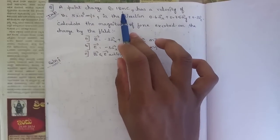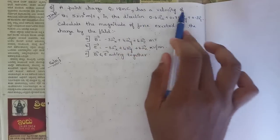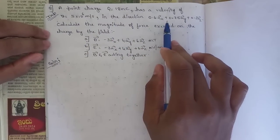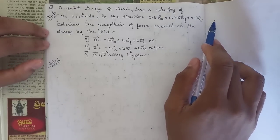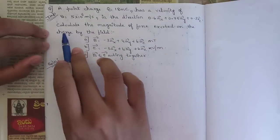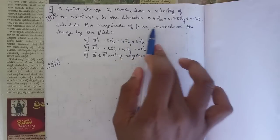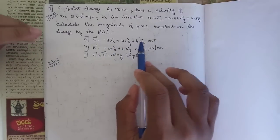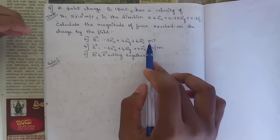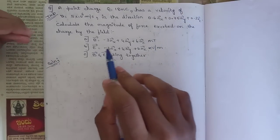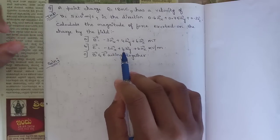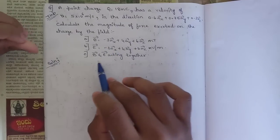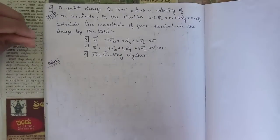A point charge q = 18 nanocoulomb (nano means 10 to the power minus 9) has a velocity v = 5×10^6 m/s in the direction 0.6 ax + 0.75 ay + 0.3 az. We need to calculate the magnitude of force exerted on the charge. Three sub-questions are given: (1) B = -3ax + 4ay + 6az milli-tesla, (2) E = -3ax + 4ay + 6az kV/m, and (3) both B and E acting together.